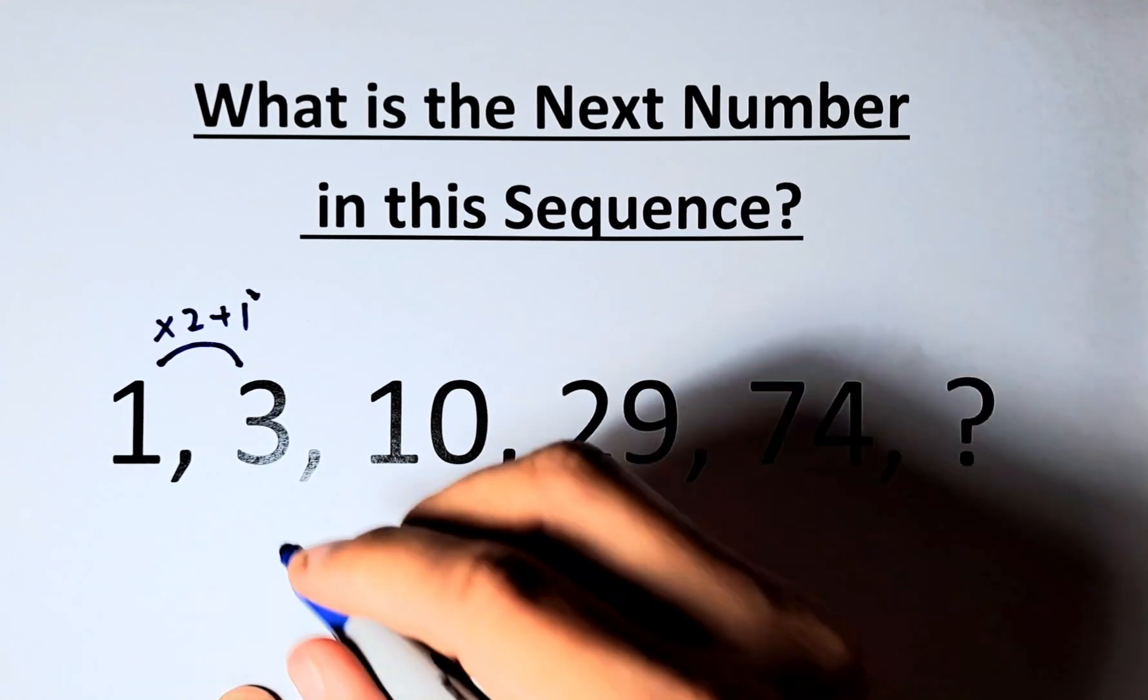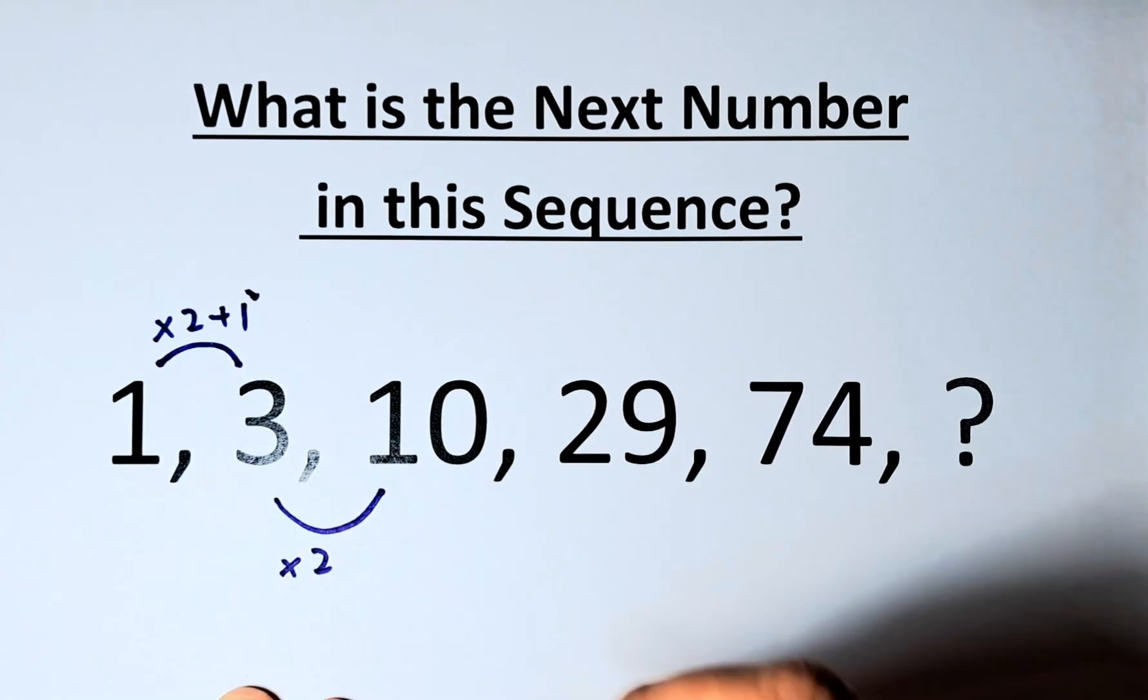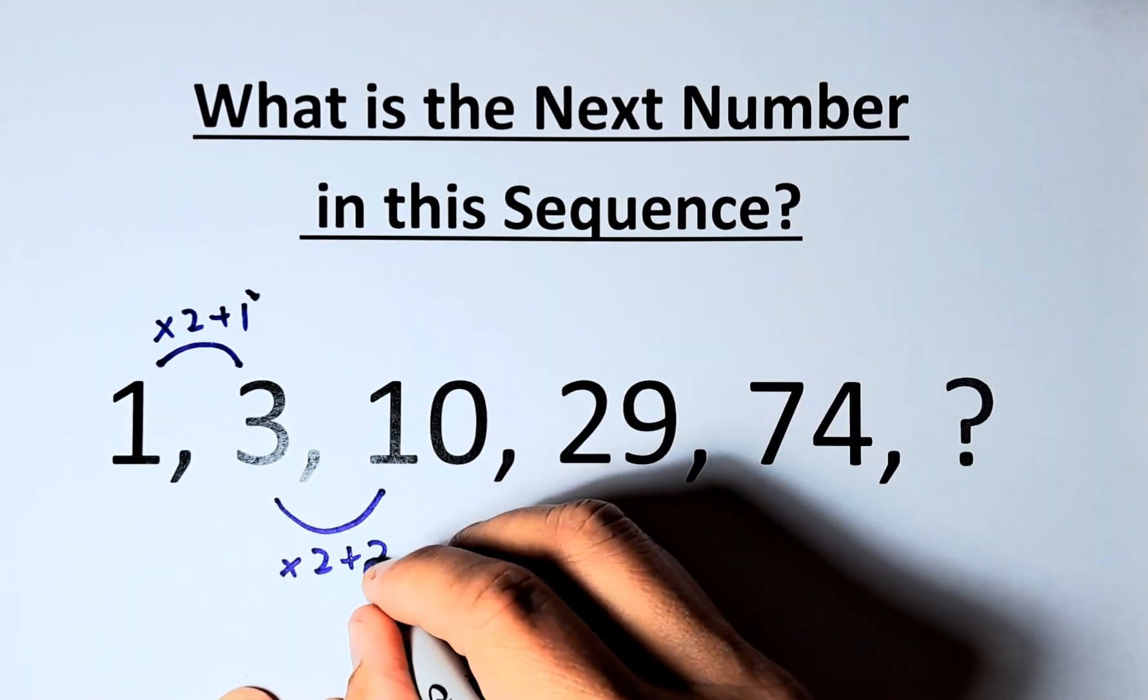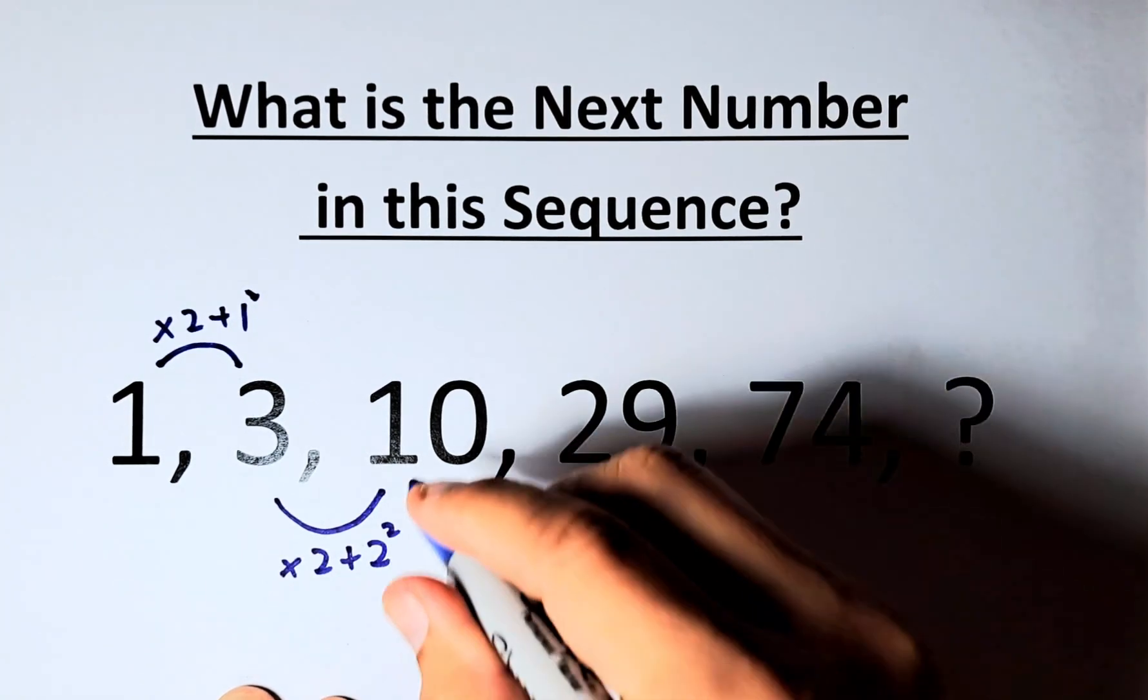Next, from 3 to 10, we're doing the same thing. If you look at the pattern, we're going to multiply by 2 first, double it. And then we're going to add this time 2 squared. So 3 times 2 is 6 plus 2 squared which is 4. So 6 plus 4 will give us 10.